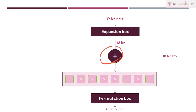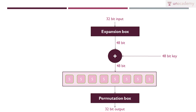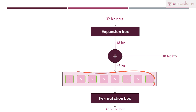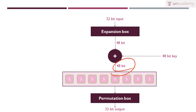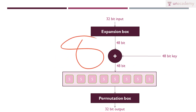After this expansion we get 48 bit data, and this 48 bit data plus the 48 bit key will be given as input to the XOR unit. After the XOR operation we again get 48 bit. Now this 48 bit will be given to S-boxes. Because we have 48 bit but we need it to be 32 bit — so we need to compress this 48 bit into 32 bit.